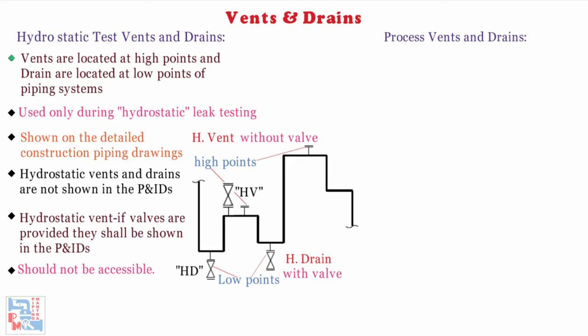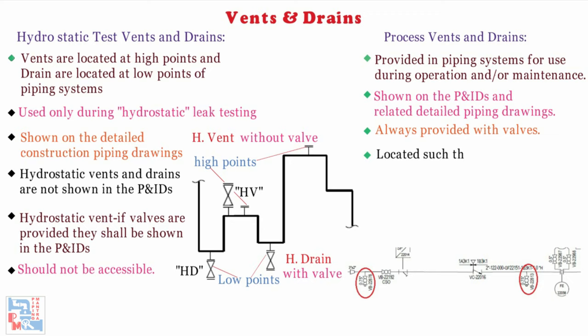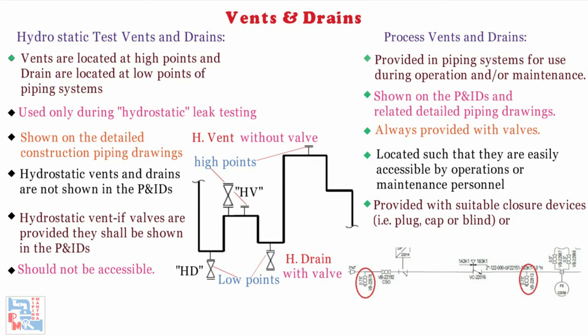Process vents and drain connections are provided in piping systems for use during operation and/or maintenance. These vent and drain connections are shown on the P&IDs and related detailed piping drawings. They are always provided with valves and are located such that they are easily accessible by operations or maintenance personnel. Such vents and drains may be provided with suitable closure devices, i.e., plug, cap, or blind, or may be connected to the vent or drain systems.